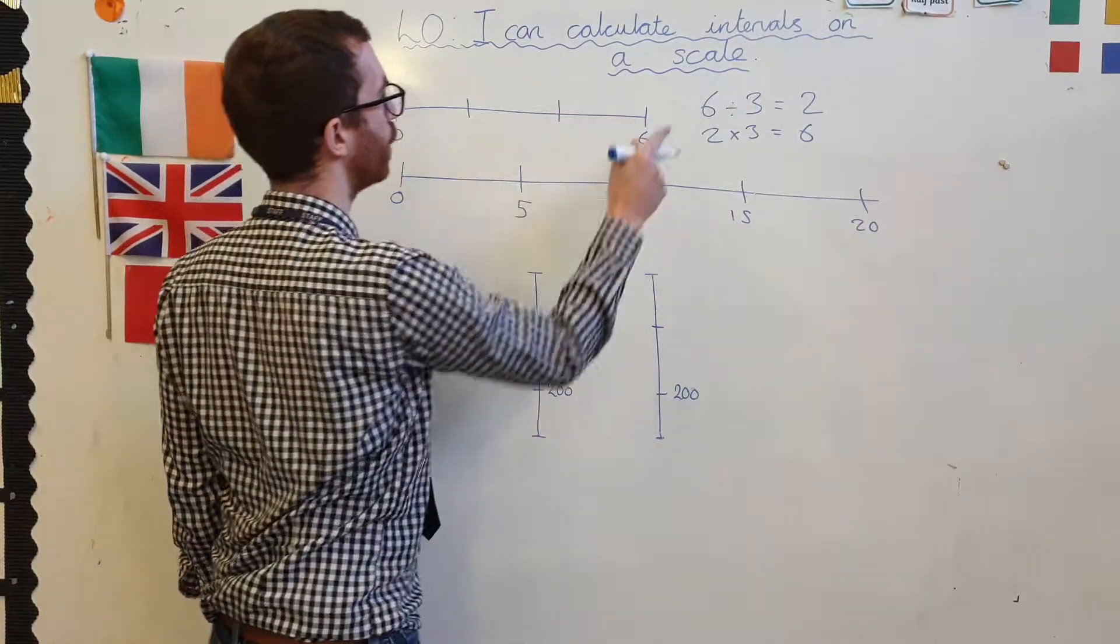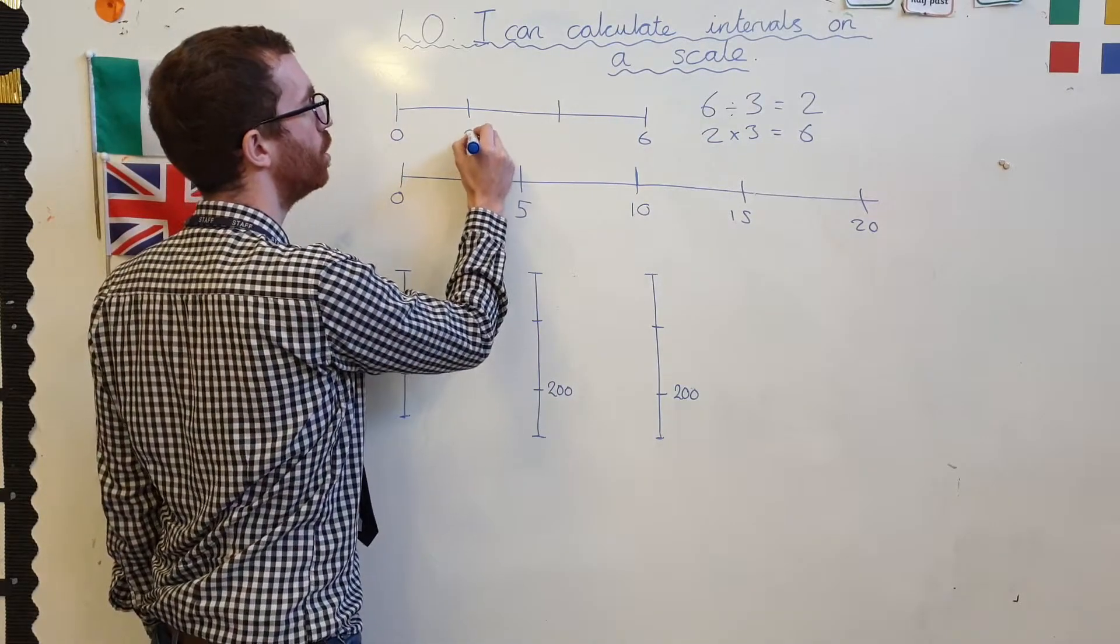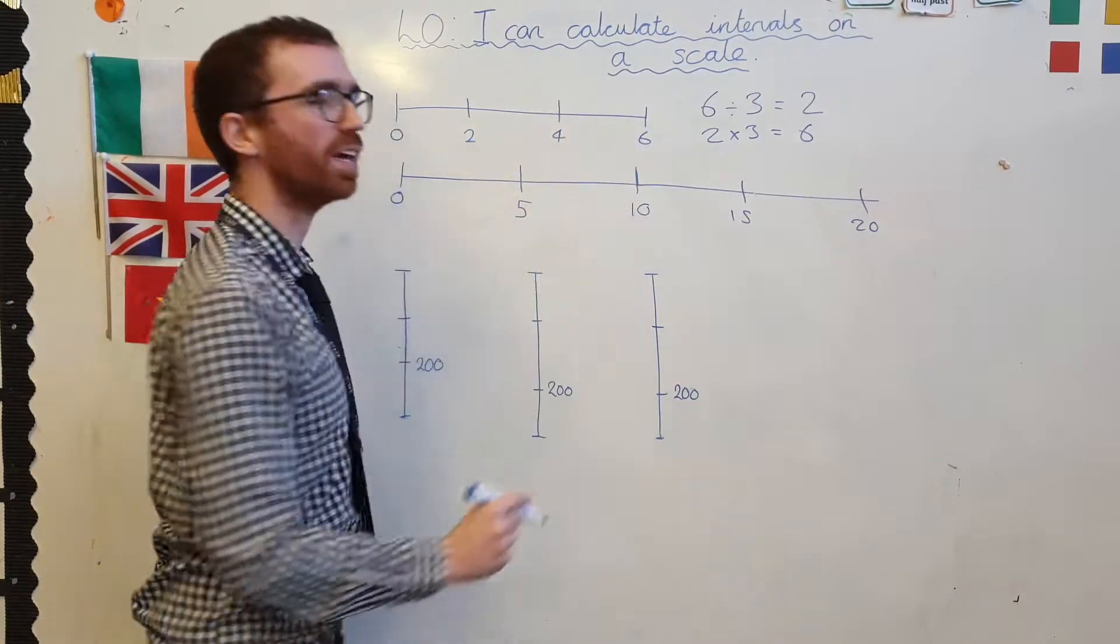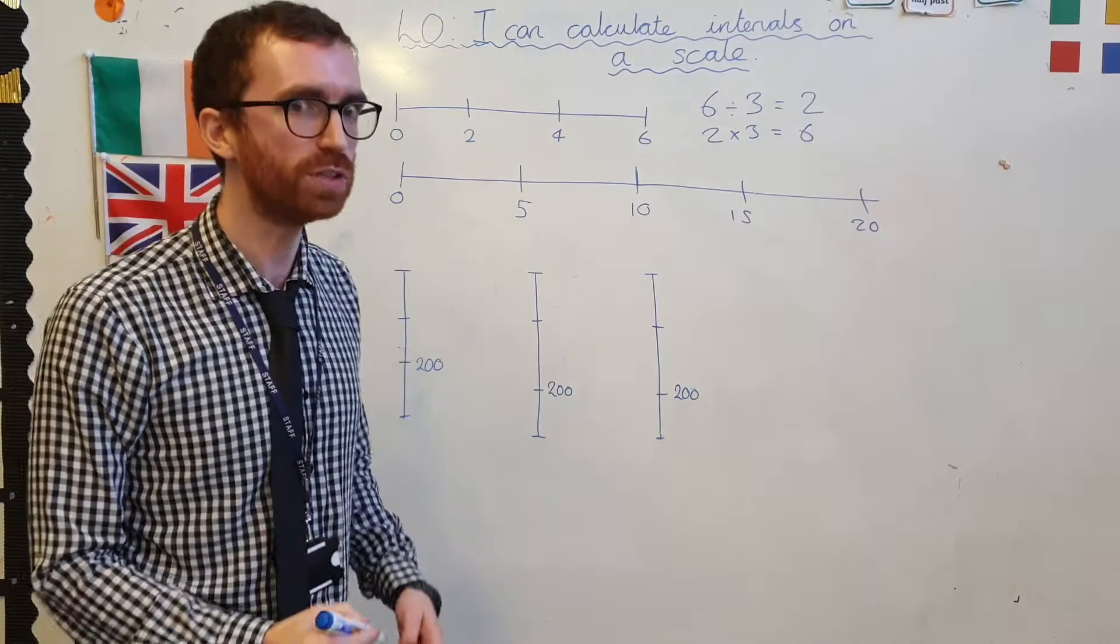So each of these points must be worth 2. 0, 2, 4, 6. Ah, that works pretty well, doesn't it?